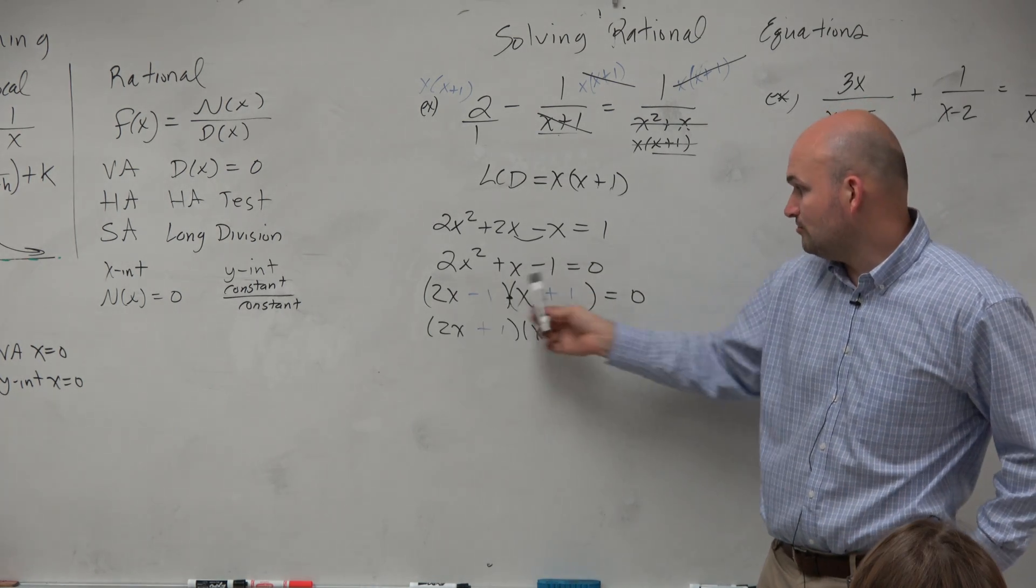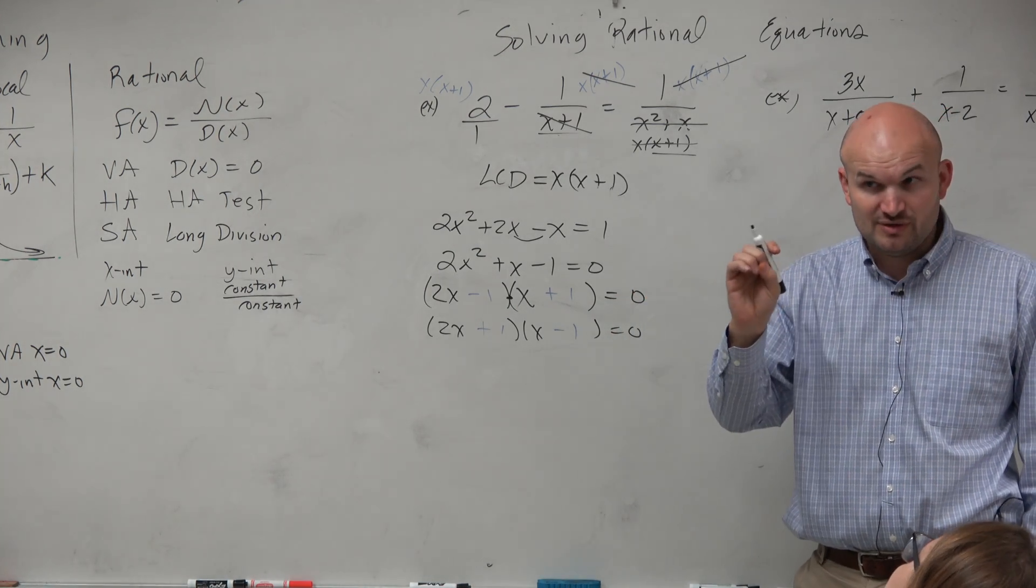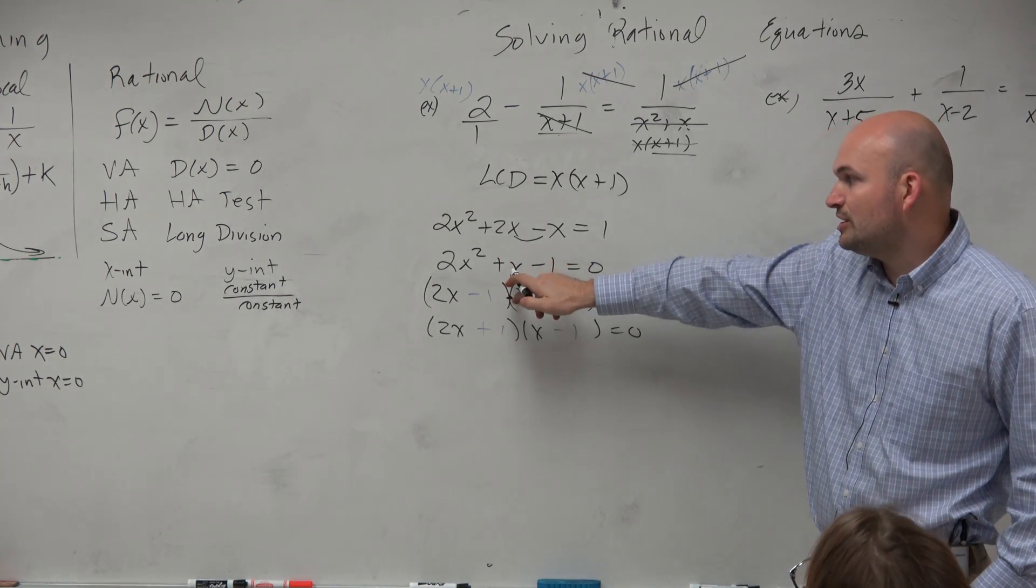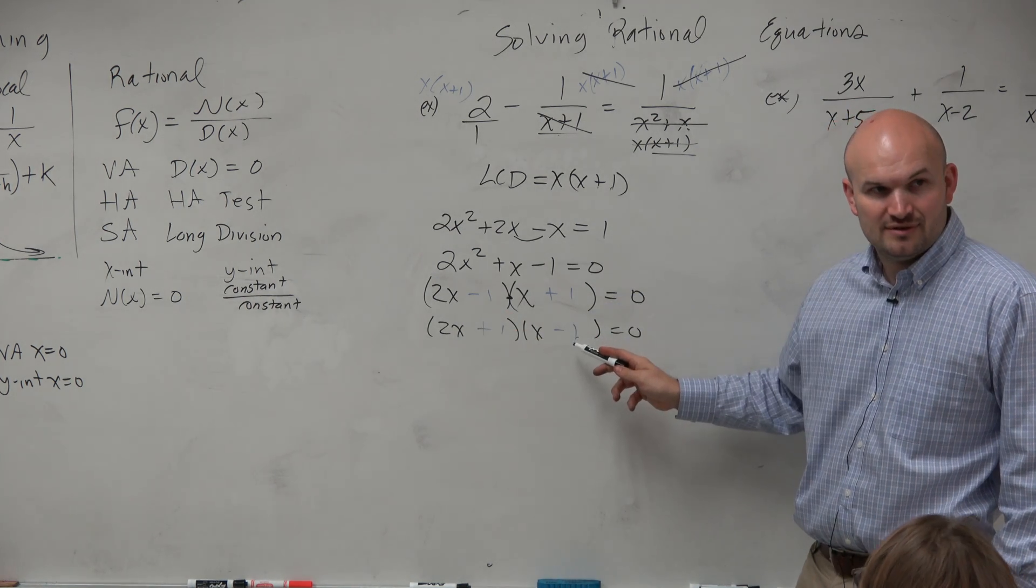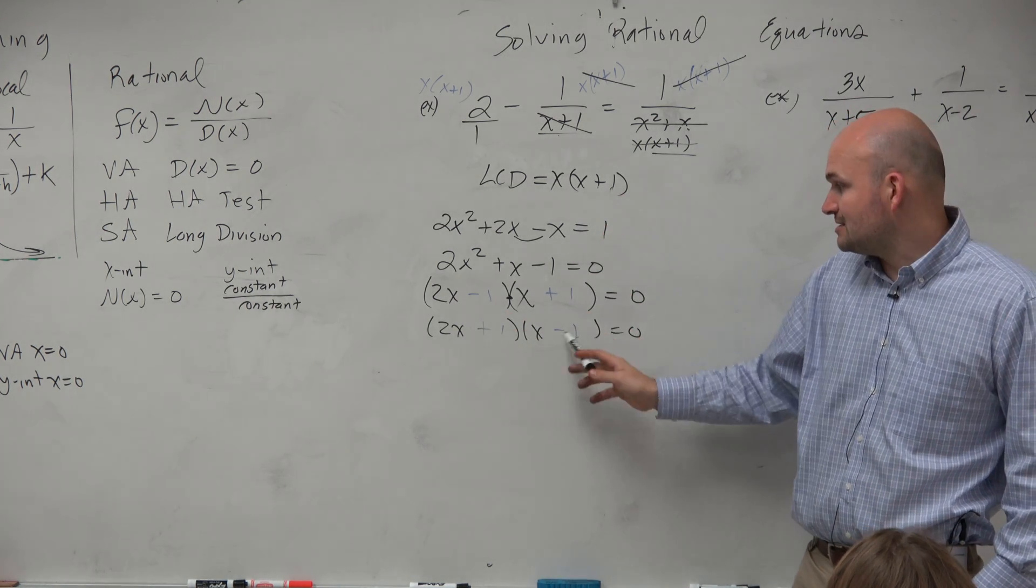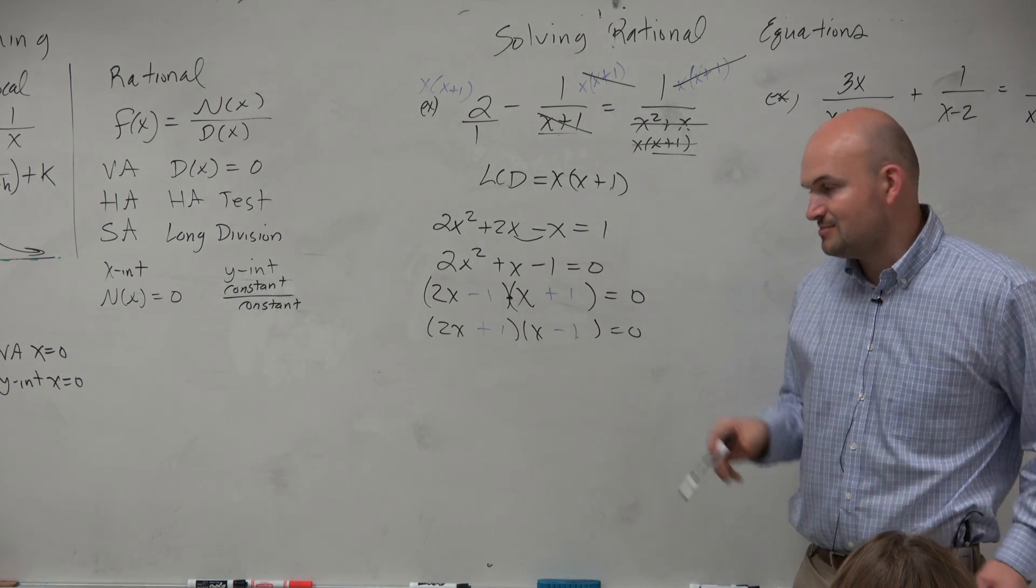So let's check. They both multiply to give you negative 1. However, which one gives you the middle term? And I can tell you without even doing this which one it is. The middle term, I want to be positive. So I don't want to multiply 2x times a negative because that would make that a negative 2x. Because if I add a negative 2x plus x, that gives me negative x. So therefore, that is my answer right there.